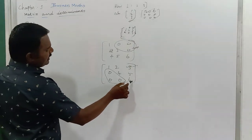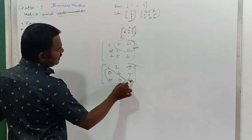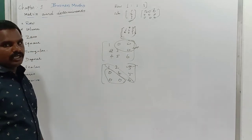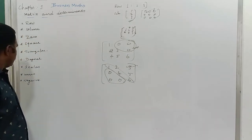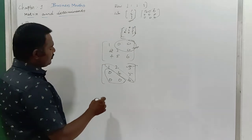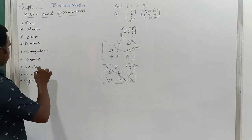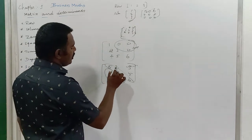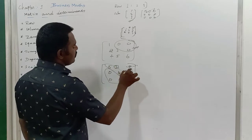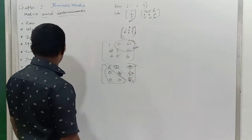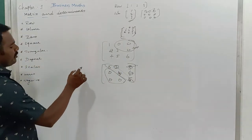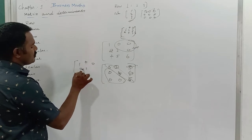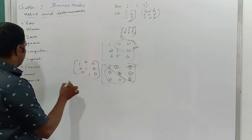Diagonal matrix means except the leading diagonal, the rest of the numbers are zero — that is called a diagonal matrix. Next is scalar matrix, where the leading diagonal contains only equal numbers, for example five, five, five, and the rest are zero. Unit matrix means the leading diagonal has only ones — one, one, one — and all other entries are zero.